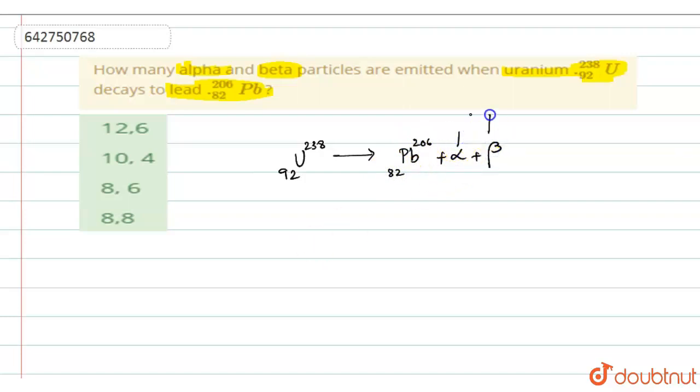You have to find how many alpha and how many beta particles are emitted. Here you can observe that there is a change in the value of Z as well as in the values of A. There is a change in the mass number as well as in the atomic number.